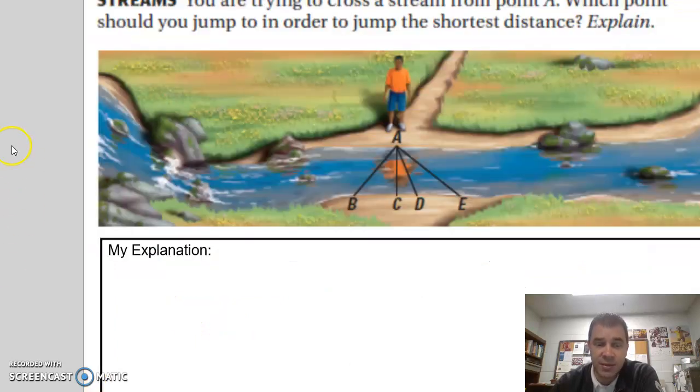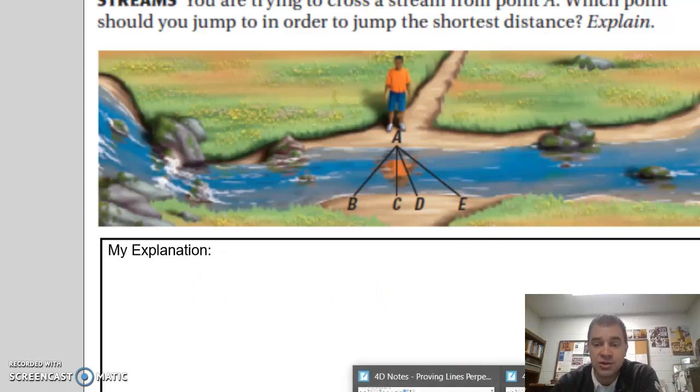The first thing I'd like you to take a look at is the bottom of your notes, where it says this is you on the other side of that stream. You're trying to cross the river over to this side. Which point should you jump to in order to jump the shortest distance? Should you go from A to B, A to C, A to D, or A to E? I would ask you to just pause right now and provide an answer and an explanation for what you think it should be.